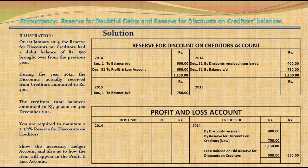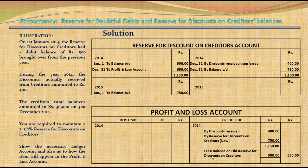2.5% of Rs. 30,000 = Rs. 750 is the new reserve, recorded as balance carried down Rs. 750. When netting the account, there is a credit balance of Rs. 650, which is transferred to Profit & Loss Account. In the Profit & Loss Account for 2014: discount received Rs. 400 plus current reserve Rs. 750 totals Rs. 1,150. Less old reserve of Rs. 500 gives a net income of Rs. 650 to be recorded on the credit side of the Profit & Loss Account.